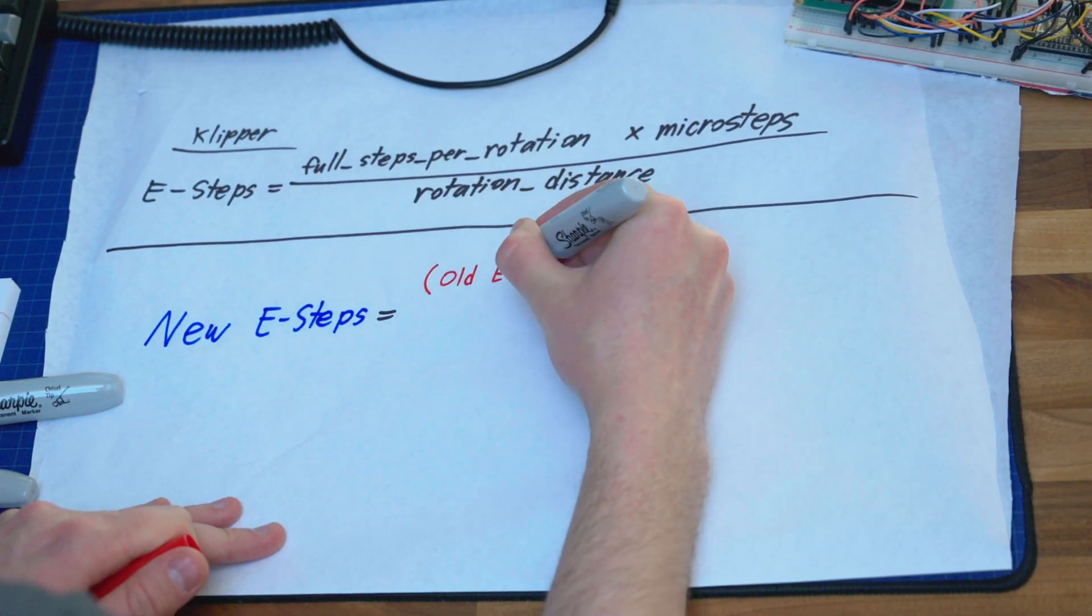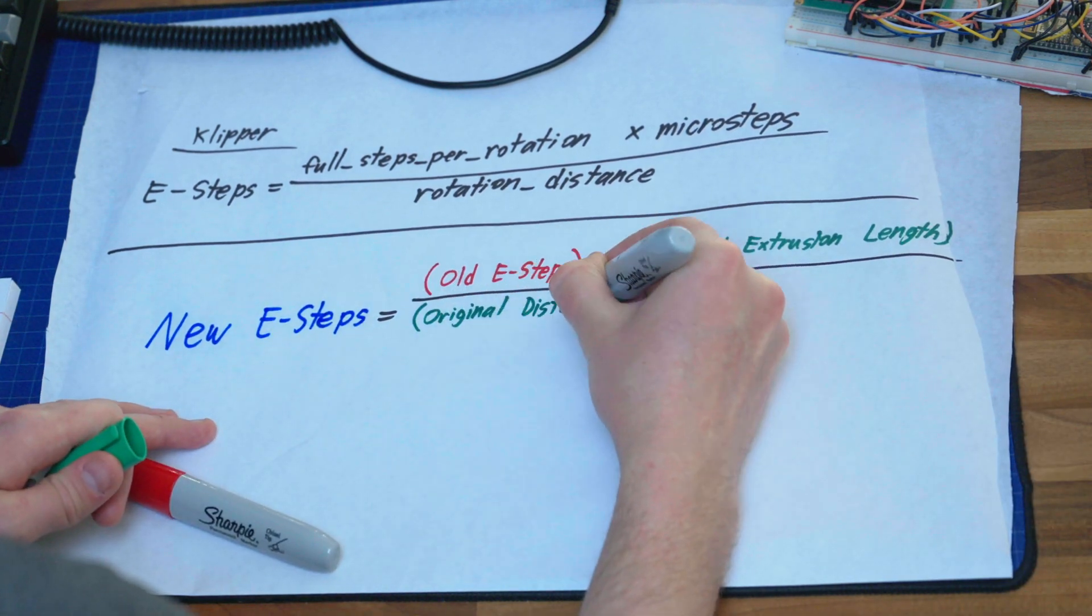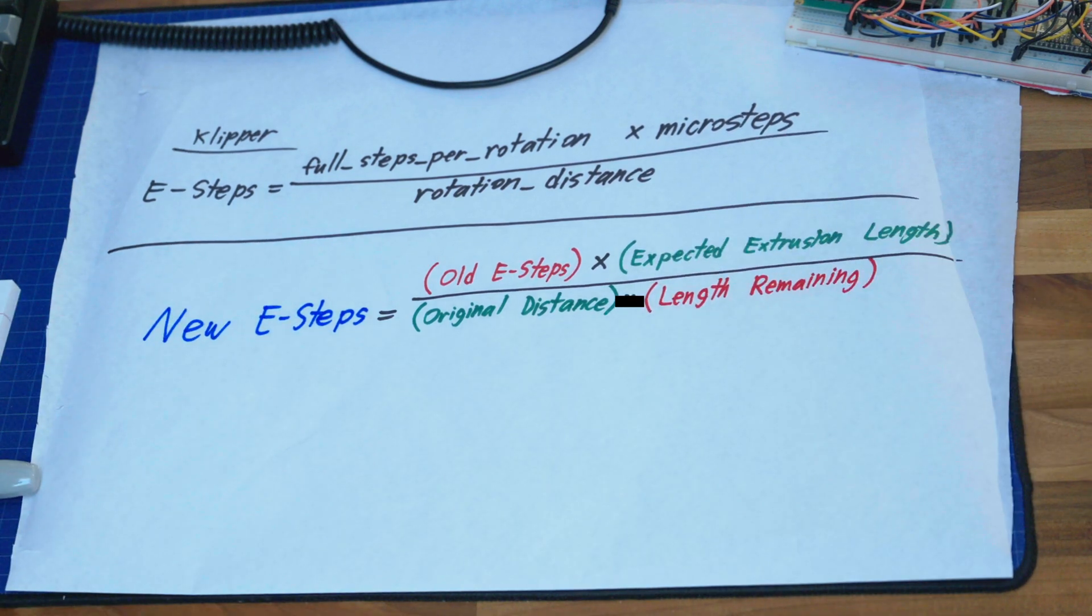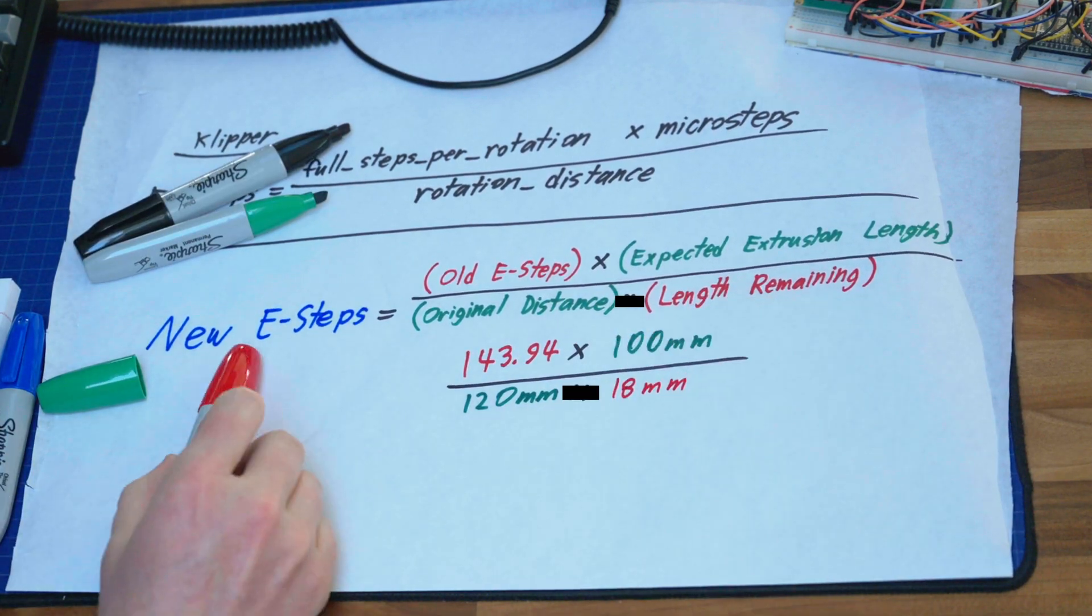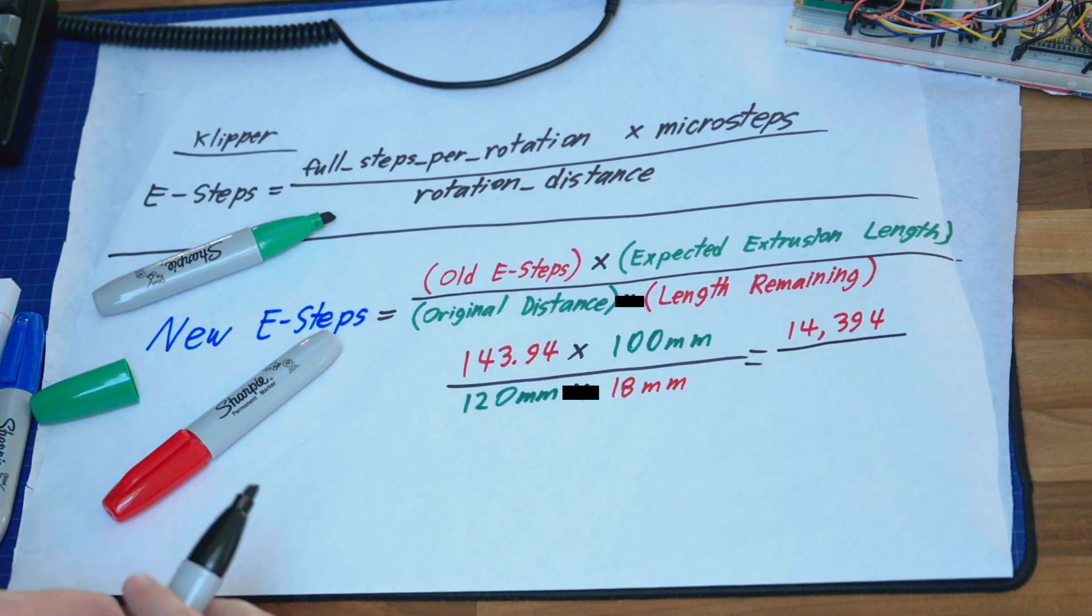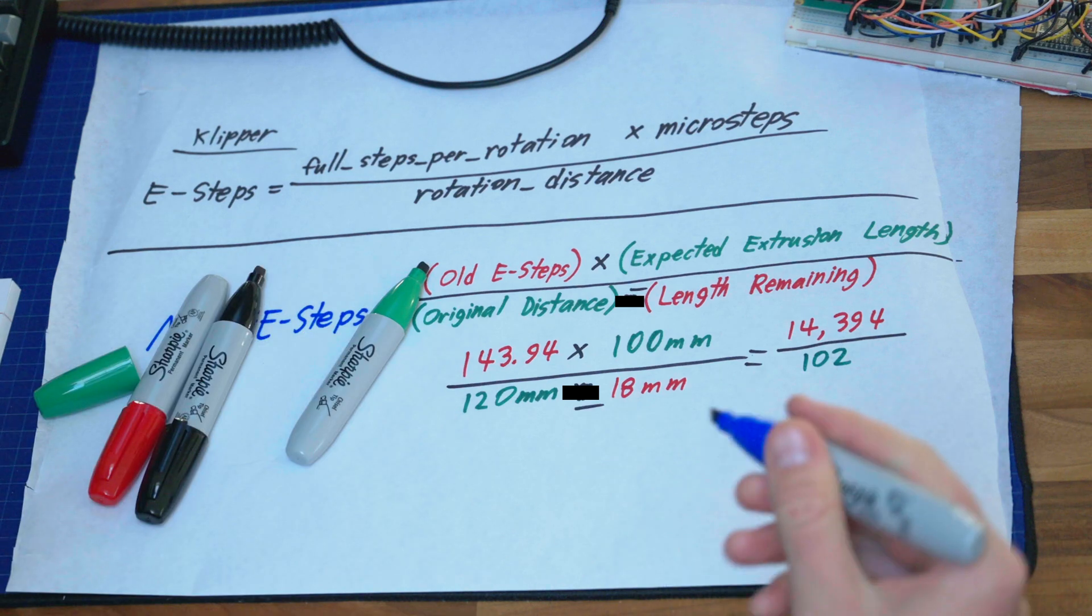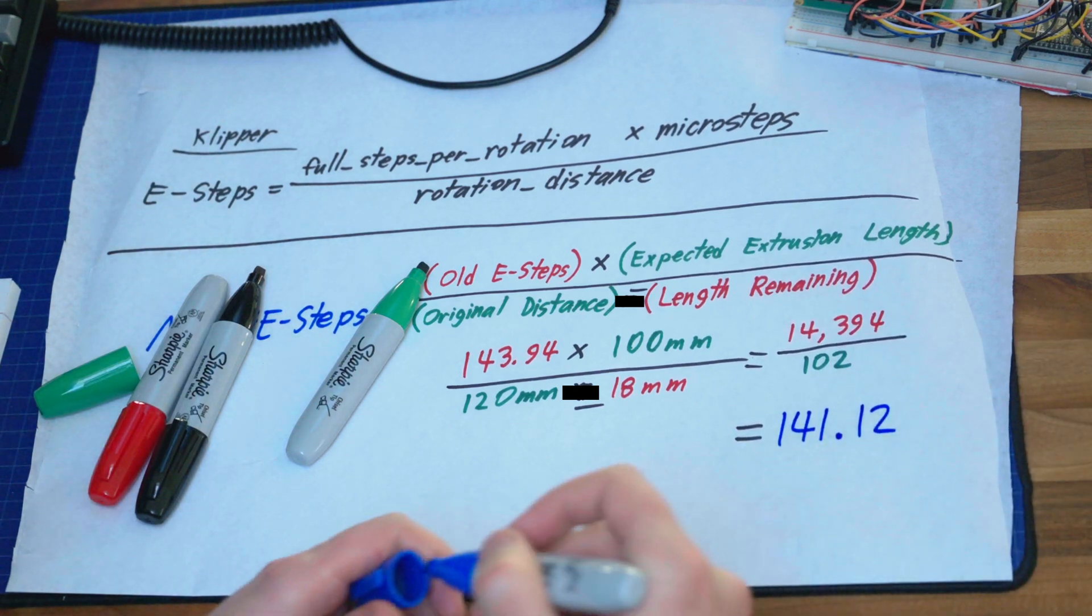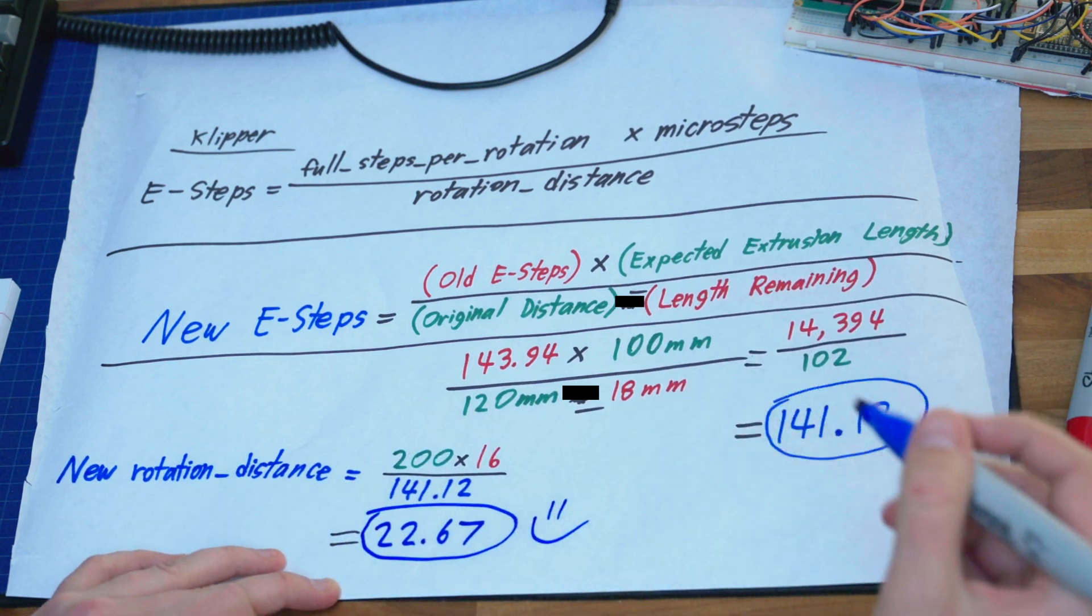So here is sort of the big equation I've created, combining a bunch of these smaller equations that some websites will give you for how to calculate this value. It's basically a ratio, percentage-wise, how far off your current value is from what you expected it to go. So you take your current E value, times it by 100 millimeters we expected, and then divide it by your 120 millimeters we measured minus what length was left at the end. So this 14,394.96 divided by 102 will give us a new value of 141.12. Then we can work that equation backwards to get our new rotation distance of 22.67.